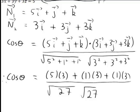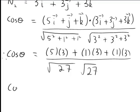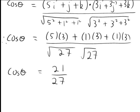So working that out, 15 plus 3 plus 3 is 21. Square root of 27 times square root of 27 is 27. So cosθ is 21 divided by 27.